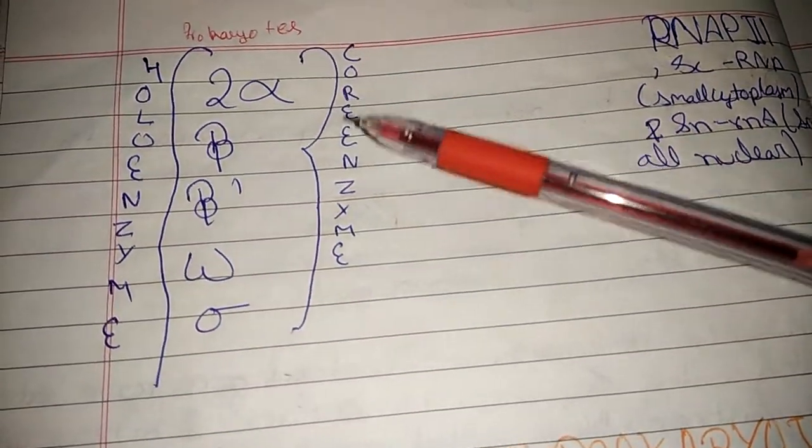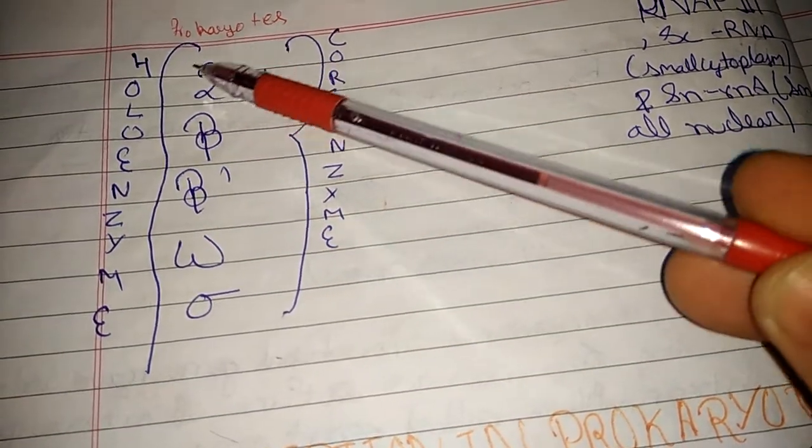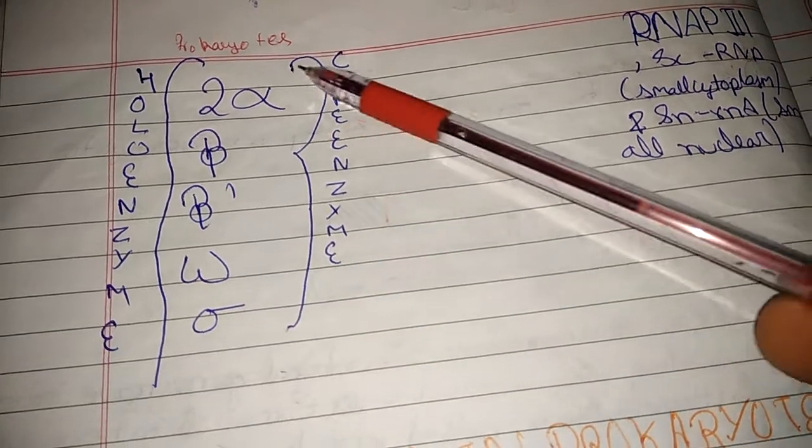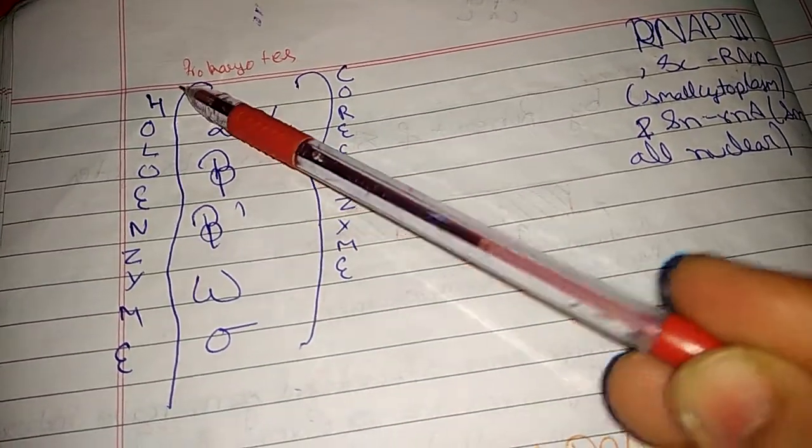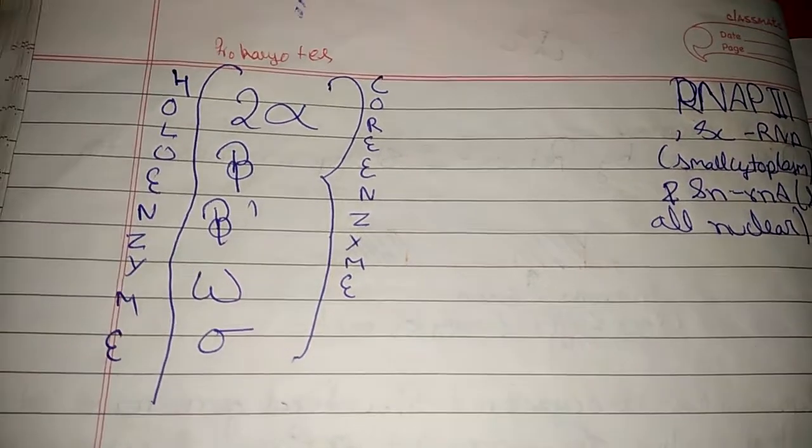What I said, I said that except sigma all these are called core enzyme, while including sigma they are called holoenzyme. That's all about.